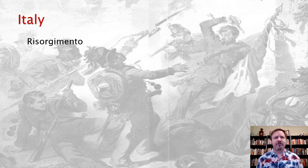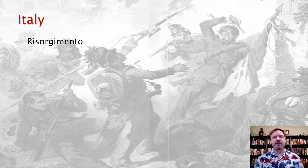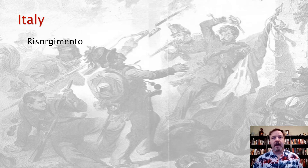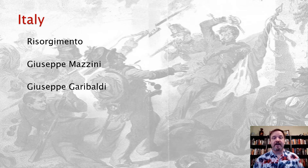The Austrians crushed the Venetian revolt. In the Two Sicilies, the government crushed that revolt as well. The pope condemned the rebellion and then fled Rome, causing for a brief time the declaration of a Roman Republic by a radical nationalist by the name of Giuseppe Mazzini. Mazzini was going to be supported by another Giuseppe — Giuseppe Garibaldi.